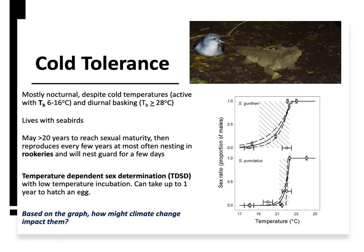The thing about tuataras in terms of reproduction is they're definitely a relic of an age before humans, because it takes them a long time to reach sexual maturity. When they do, it can often take several years between nesting attempts. This means they have a very low capacity to recover their population once it starts to dwindle.